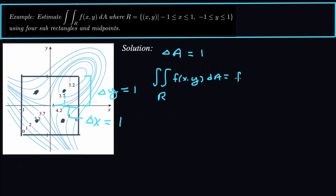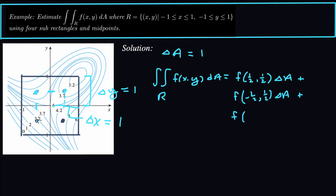So this is going to be f(1/2, 1/2) times delta A — that's the first midpoint right here at (1/2, 1/2). Plus f(−1/2, 1/2) times delta A — that's this x-coordinate and this y-coordinate. Plus f(−1/2, −1/2) times delta A, going down to the lower left. Plus the last point, f(1/2, −1/2) times delta A. In each case delta A equals 1, so we just substitute those in.